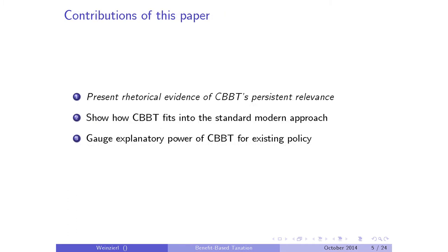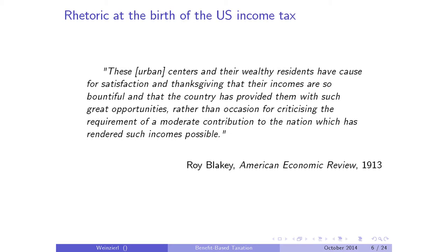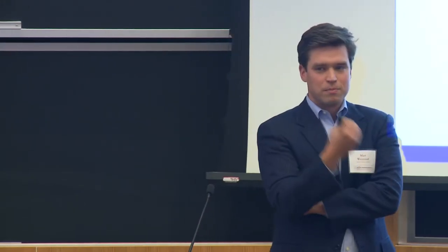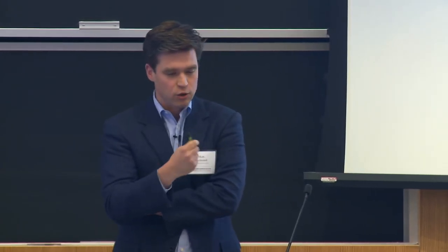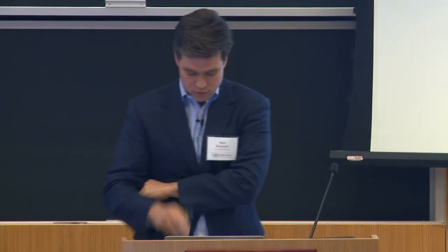Let's get into the rhetorical evidence. This is a fun quote—from what was like the second issue of the AER, right after we passed the constitutional amendment allowing an income tax on the very top of the income distribution. This was a University of Minnesota economist. The key point is that these rich people now paying an income tax should essentially be glad to make a moderate contribution to the nation, which has rendered such incomes possible. The benefit of being in this country is that you are able to earn these incomes, and that's what taxes should be based on—your ability.